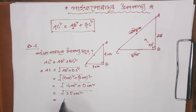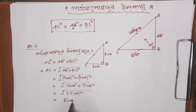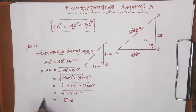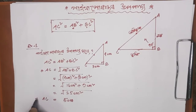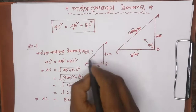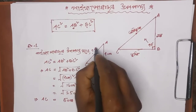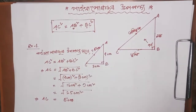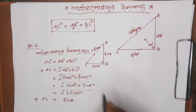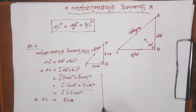25 cm squared means 5 cm. So, AC means 5 cm. AC equals 5 cm.